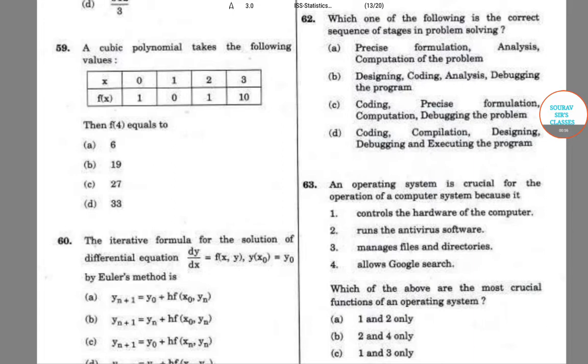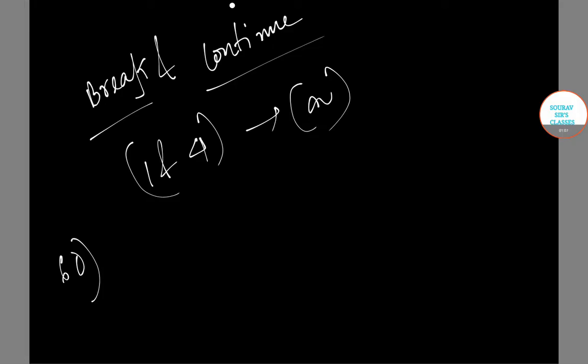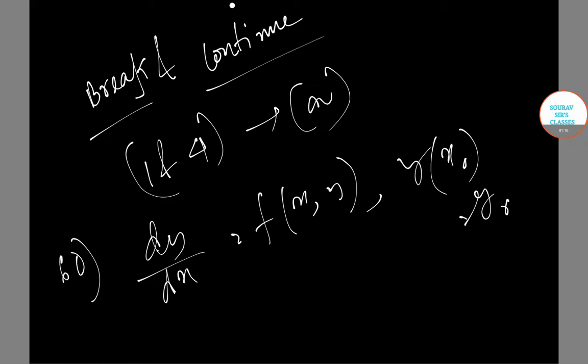We are asked to calculate what will be the iterative formula. So we can say that dy/dx equals f(x,y) and y(x₀) equals y₀. Then Euler's method states that the iterative method is y(n+1) equals yn plus h f(xn, yn). So the option is option D.